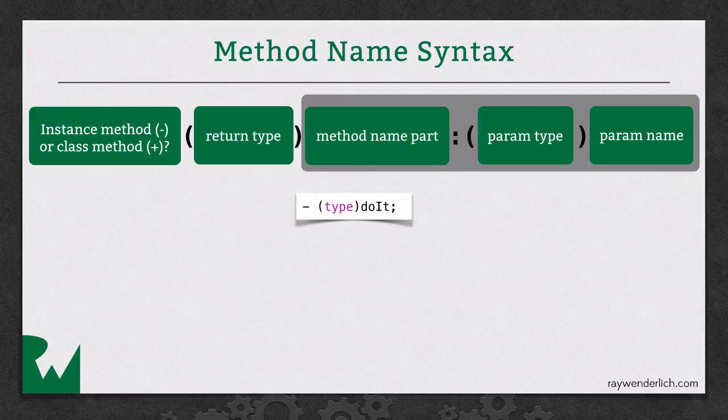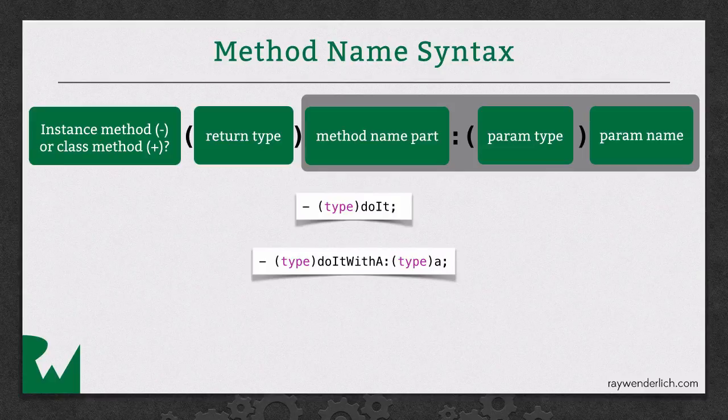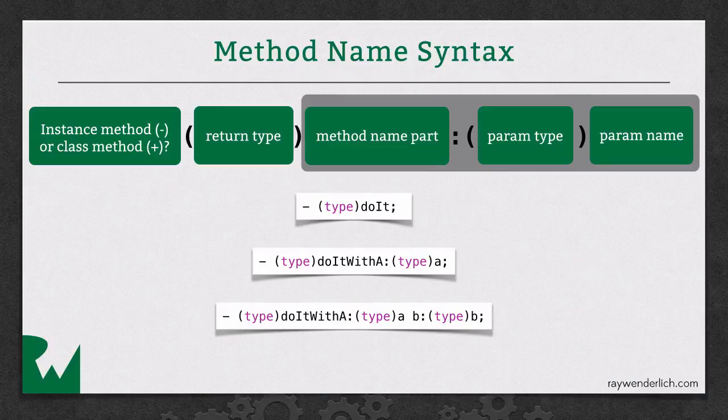So let's take a look at a couple examples. First one is a simple method that takes no parameters at all. So you just put a dash. In parentheses, you put the return value. And then you put the name of the method. Here's an example of one that takes a parameter. So after the first part of the method name, you put a colon, the type of the first parameter, the name of the first parameter. And then you just repeat this for as many parameters as you might need. So here's a method. And the way you would describe this method is you would call it doItWith A colon B colon. And it takes two parameters named A and B.